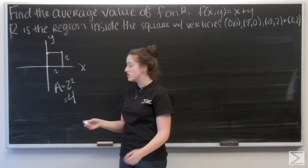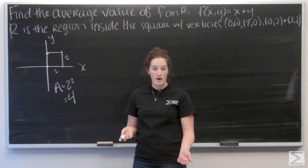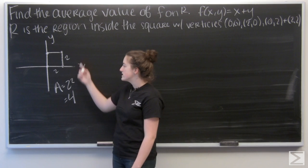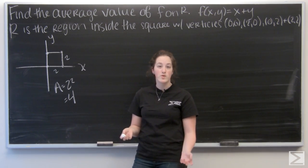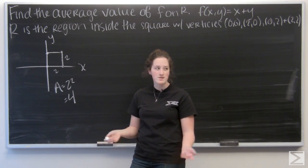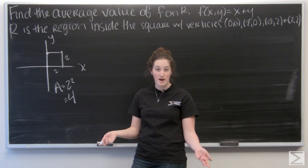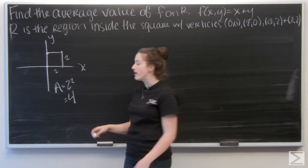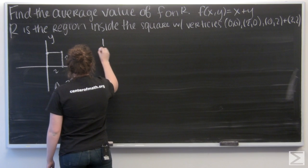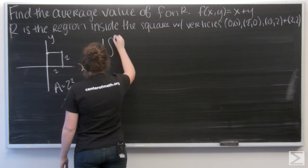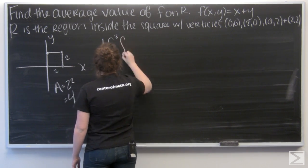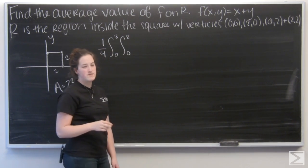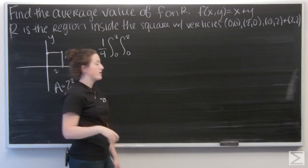So let me go ahead and set up my integral. I'm not given specific bounds for x and y, but from the picture, it's pretty easy to tell that x and y both go from 0 to 2. And since all the bounds are constants, it doesn't really matter which order I integrate in. But I'm going to take y first. And the function that I want to find the average value of is x plus y.